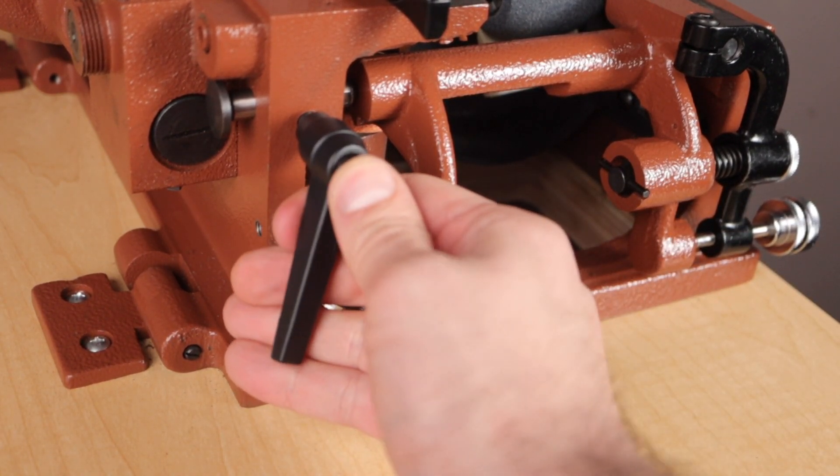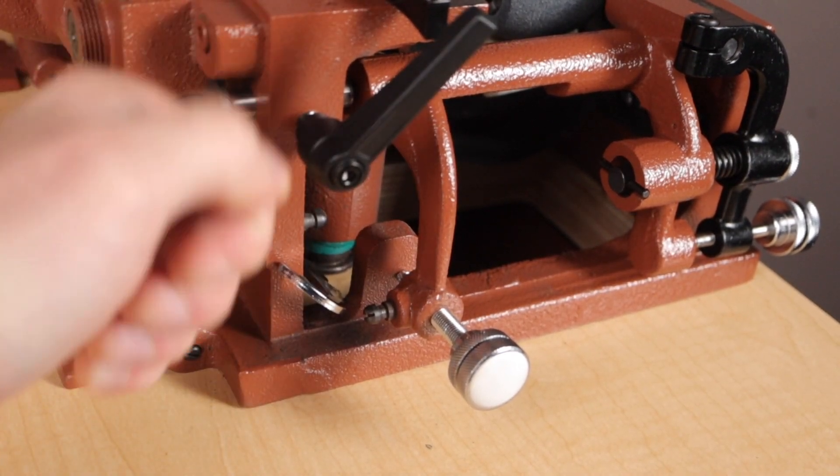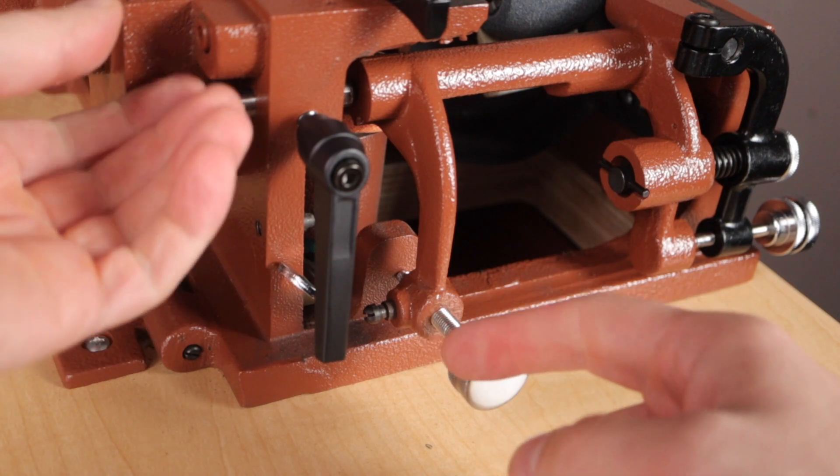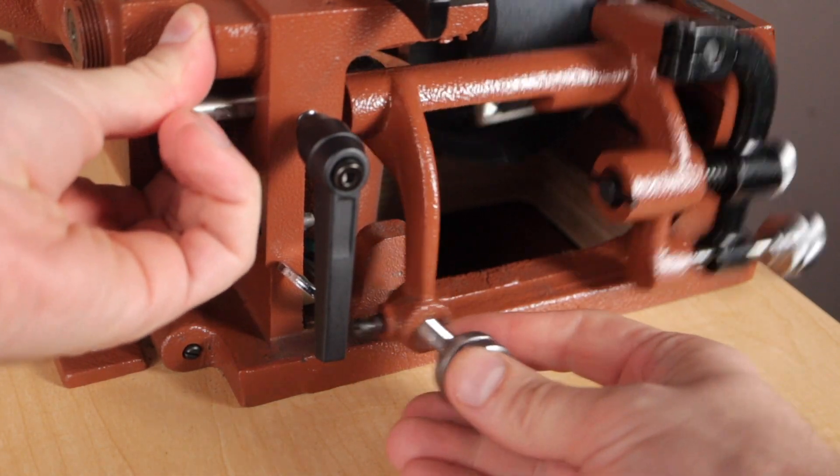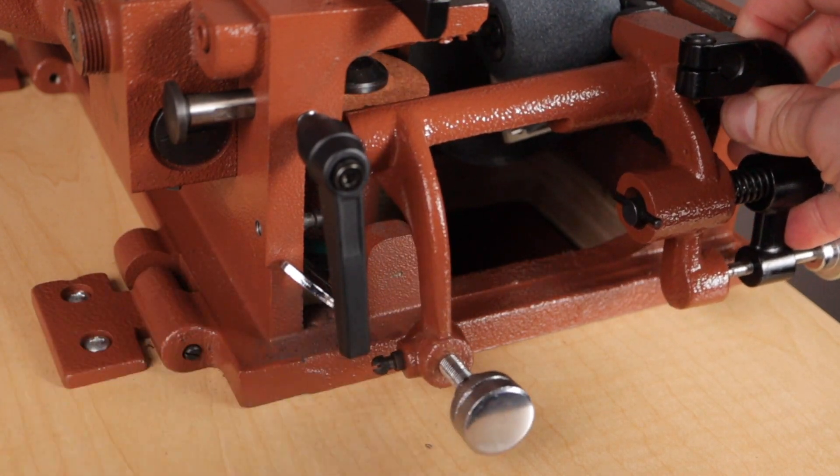Loosen the black handle center pin screw and pull the roller bracket center arm pin away. Now you can remove the entire roller bracket arm carefully.